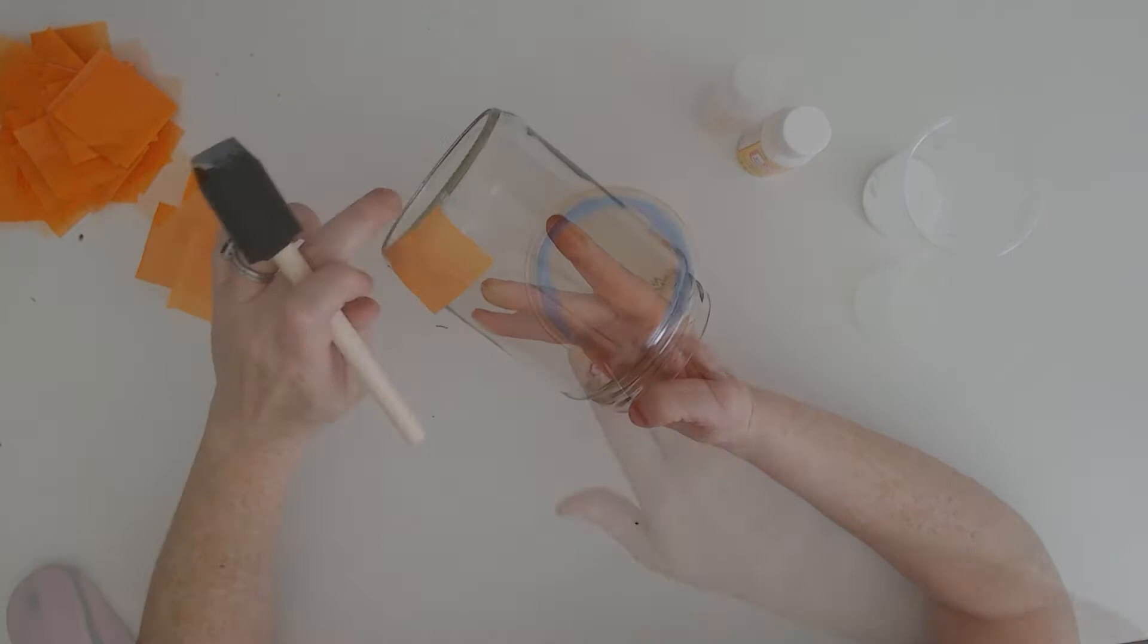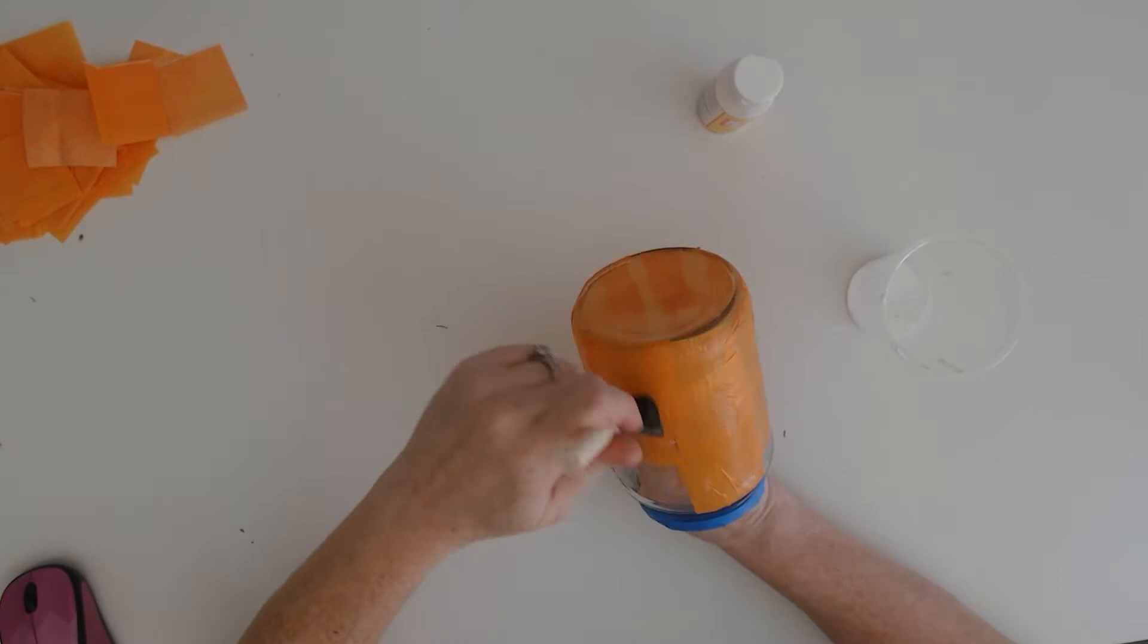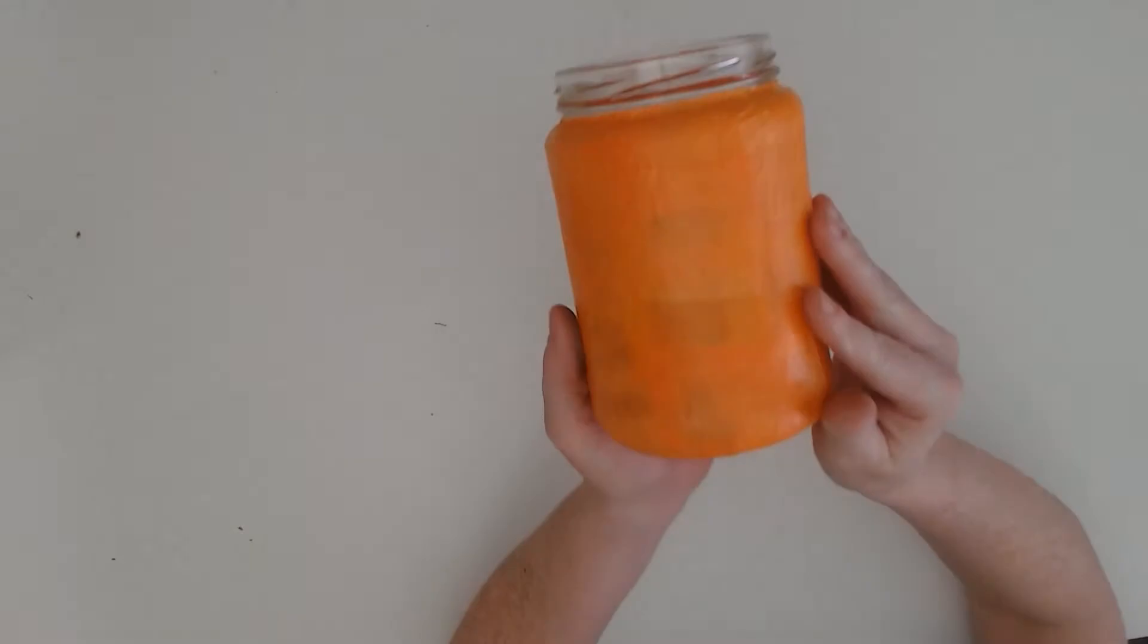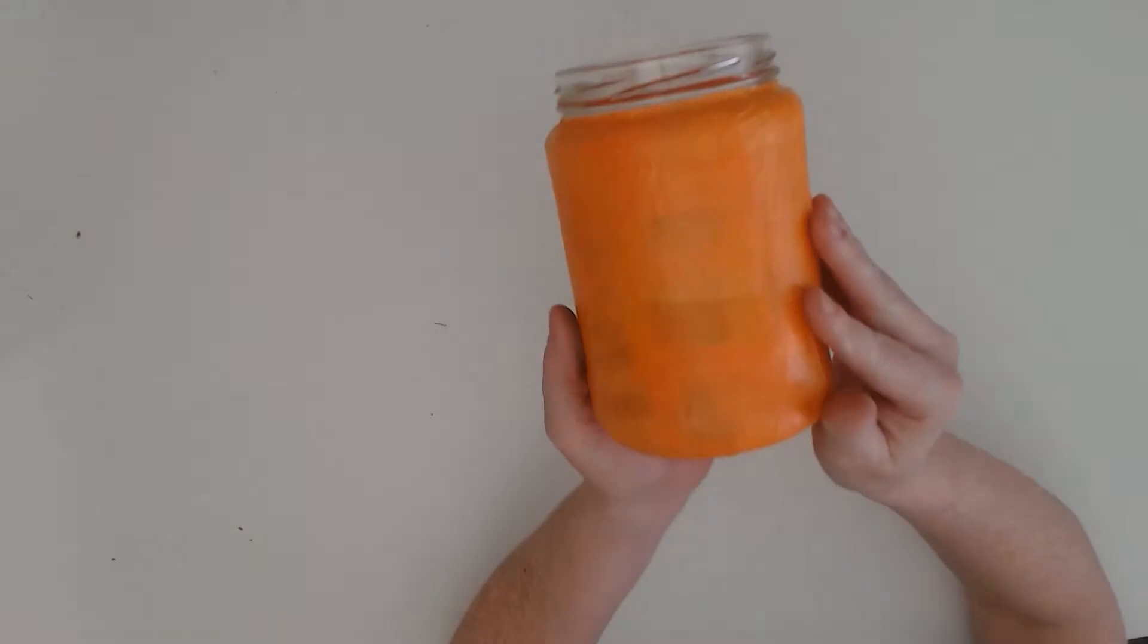If you want it to be more transparent, then just don't apply as much tissue. If you really want to layer it up, then you can do that as well with some more Mod Podge. When you're done, make sure the Mod Podge dries really well, preferably overnight.